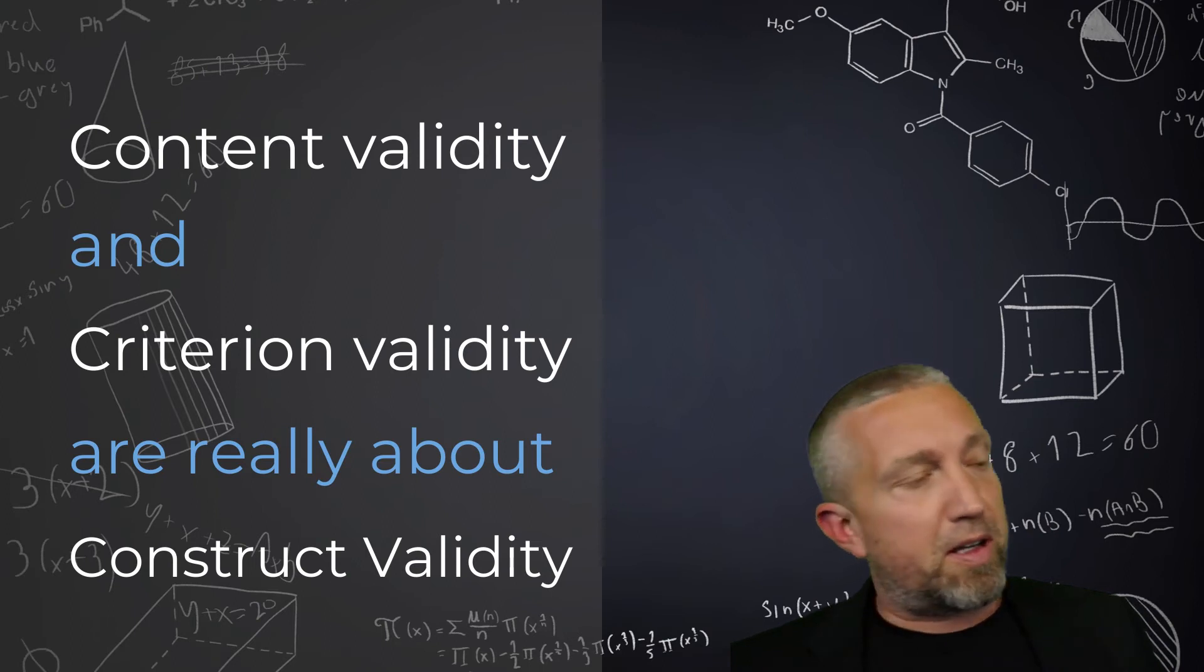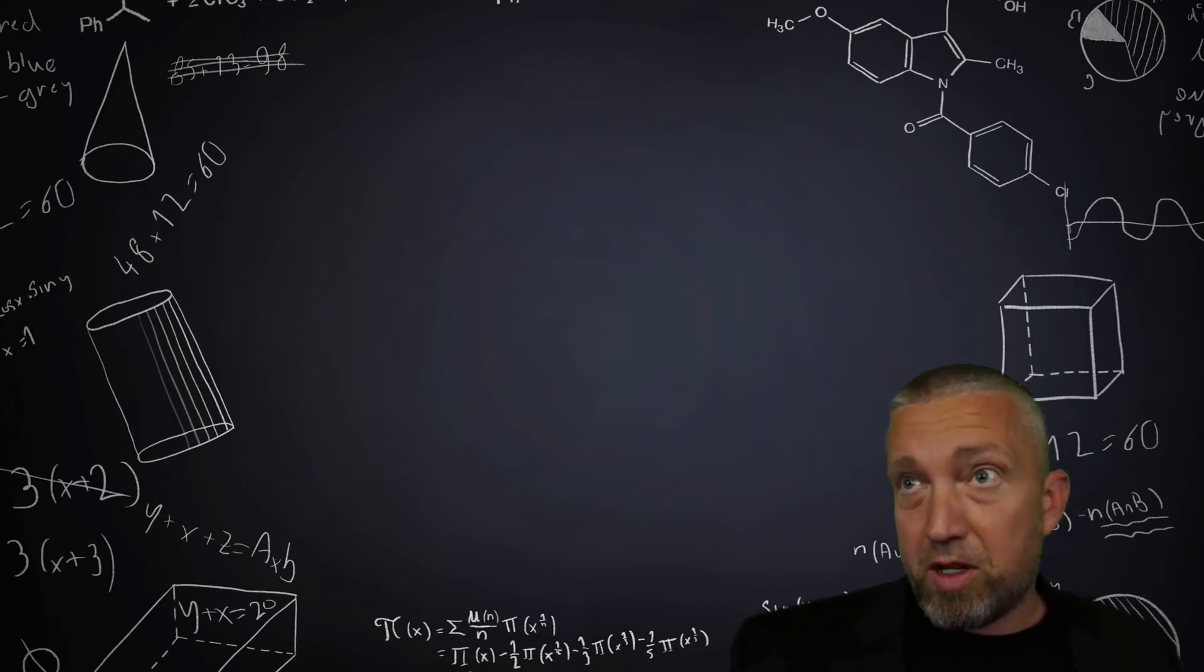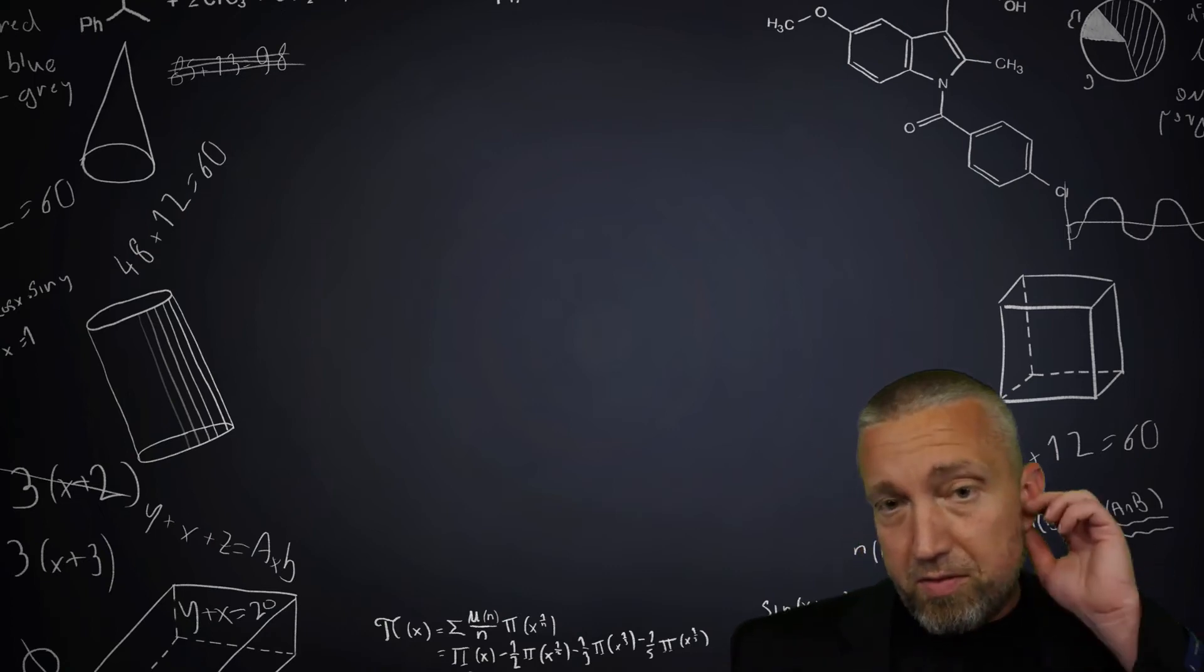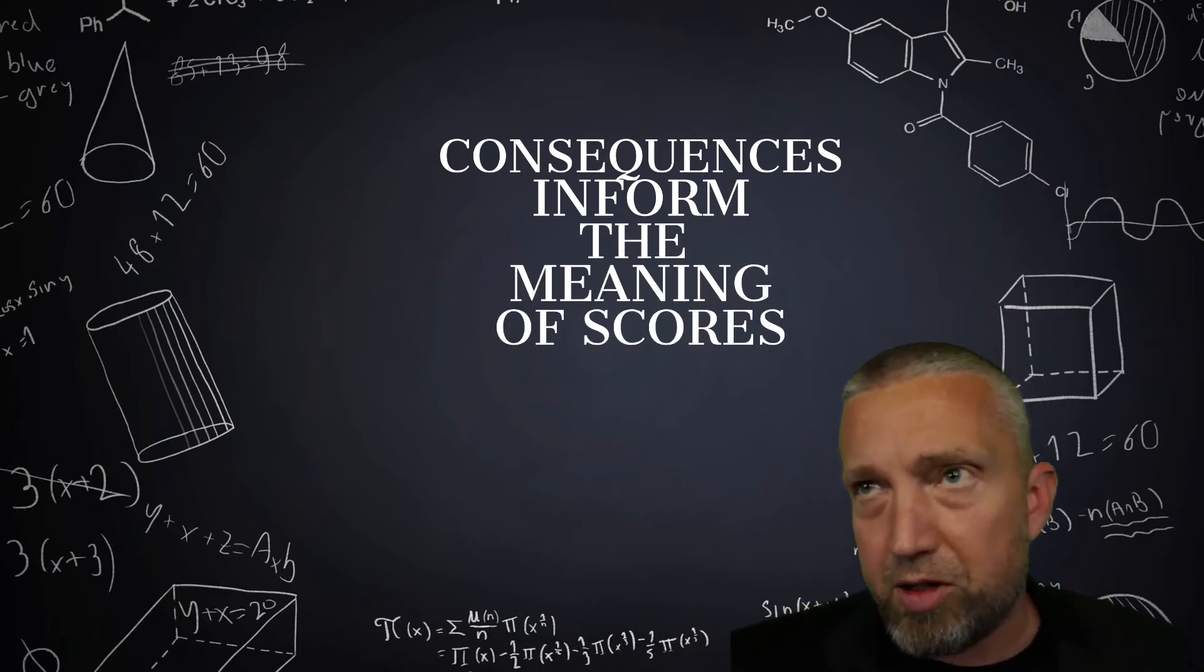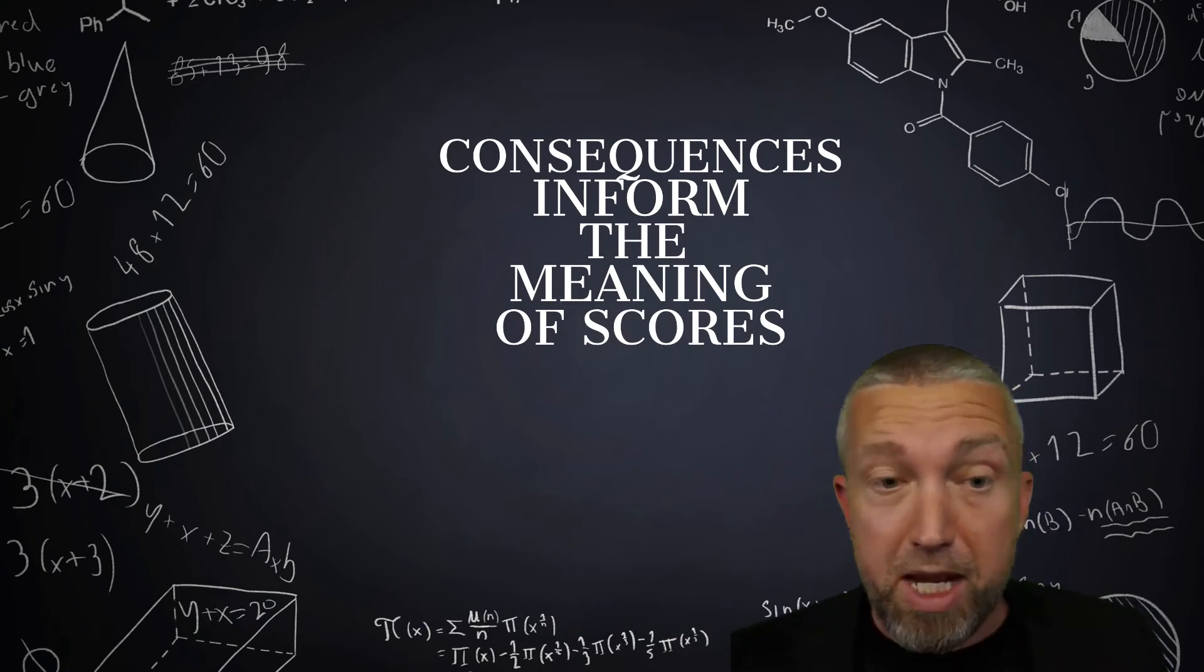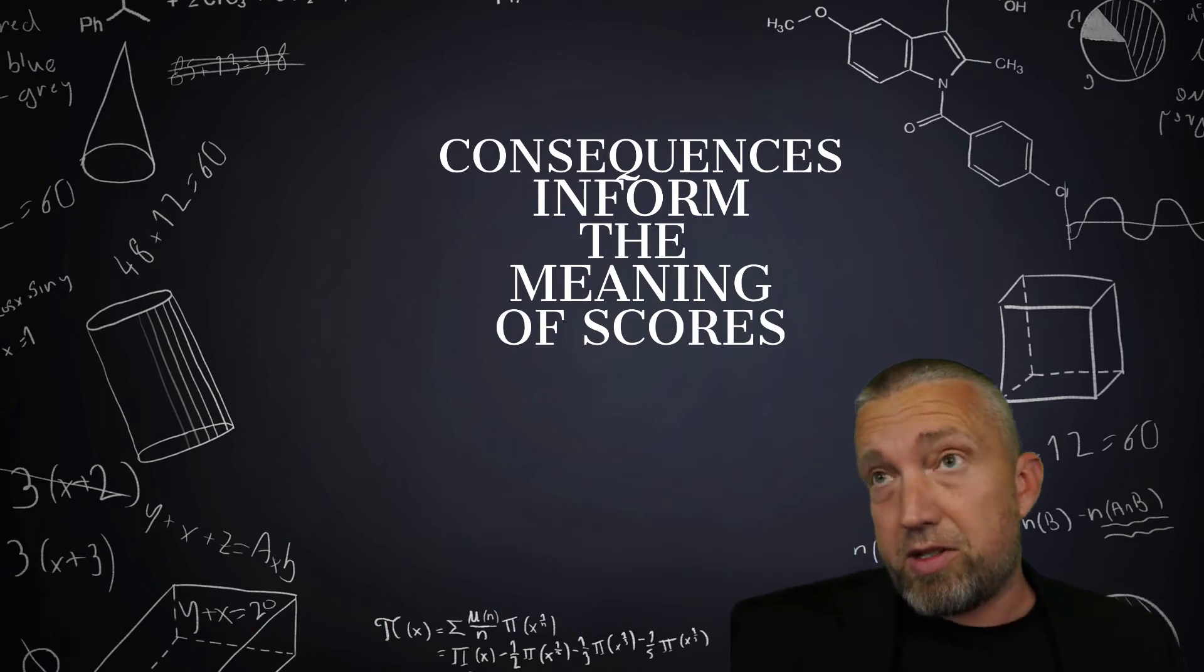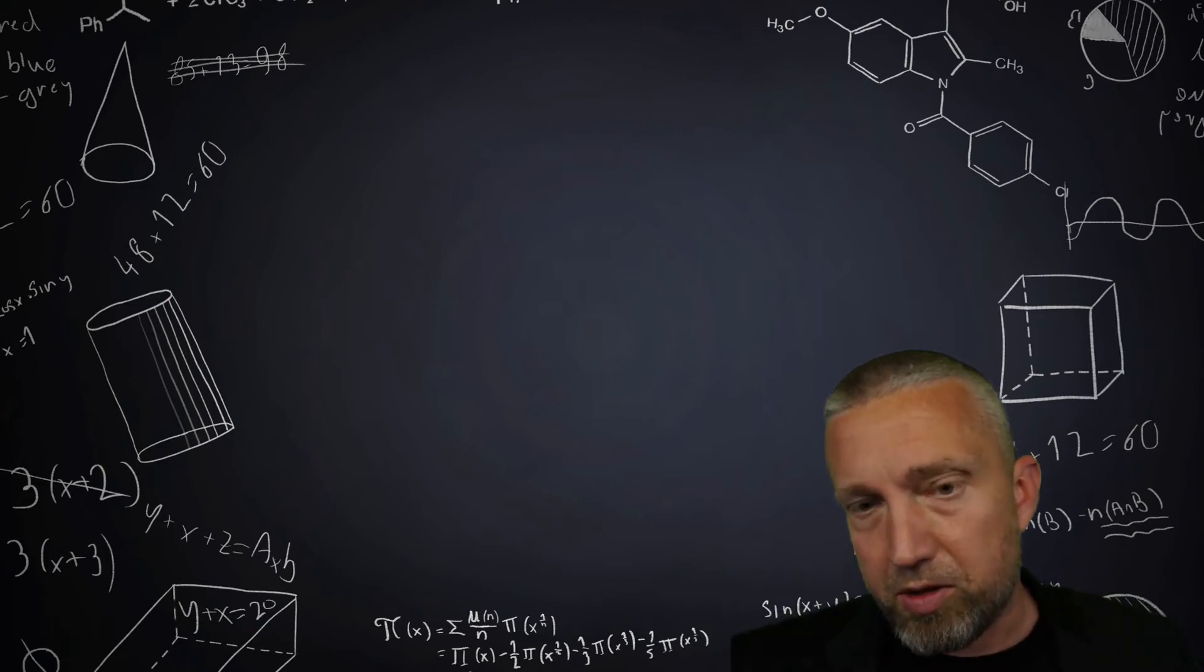Moreover, Messick also included consequences as an aspect of construct validity. In his view, which I'm going to make other videos that really dive into these topics, the consequences of testing, the consequences of our interpretation of the scores, how we use the scores, also contribute to the meaning that we can derive about these scores. It was for some of these reasons that he said the consequences of testing are essential, an important part of what we think about when we're thinking about construct validity.